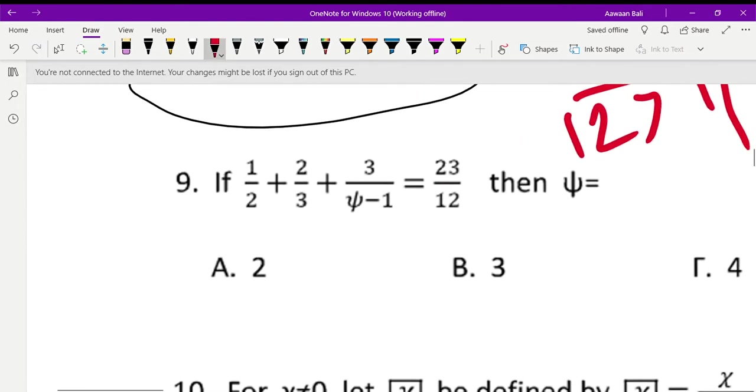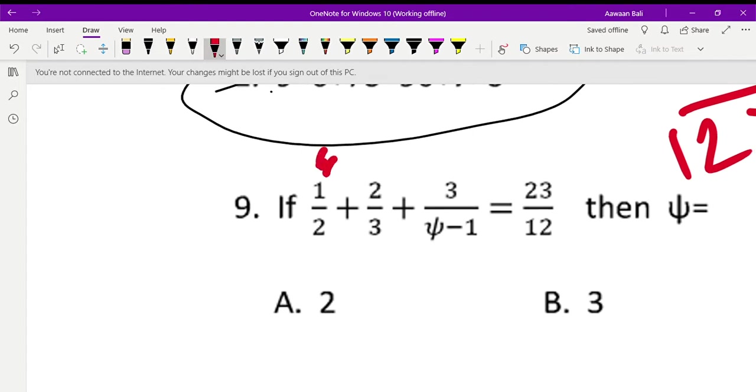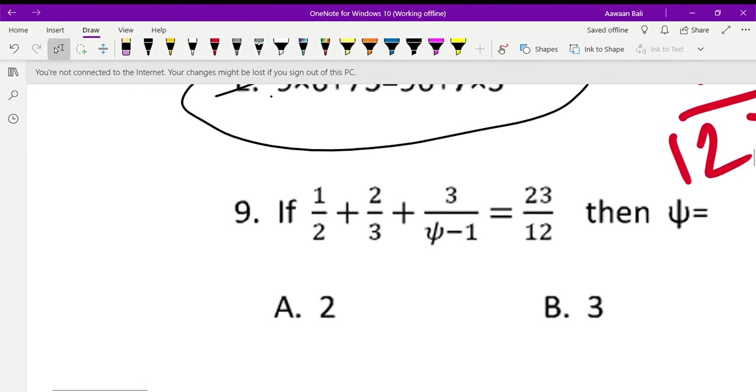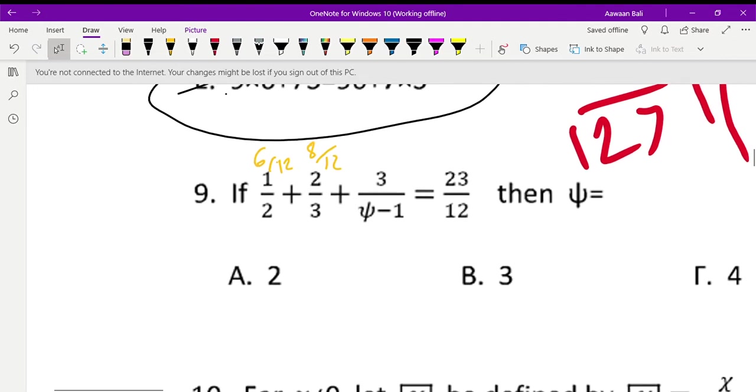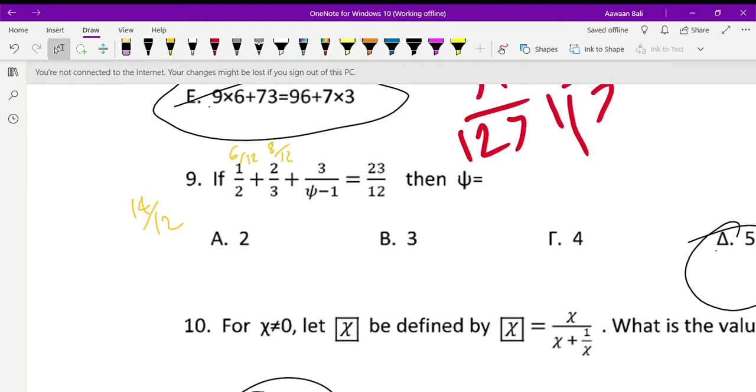Question number 9. If 1 upon 2 plus 2 thirds plus 3 upon C minus 1 is equal to 23 upon 12, then what's C? So that means you have to find the LCM of 12. The LCM is 12, so 1 upon 2 becomes 6 upon 12, and then we have 8 upon 12. So that means 6 upon 12 plus 8 upon 12 is 14 upon 12. We have no need of converting it into a mixed number right now, because this is already an improper fraction and it's easier to work with improper fractions now.